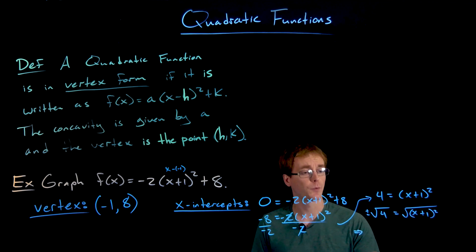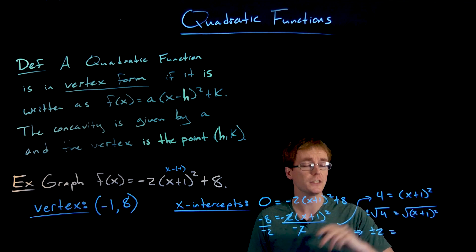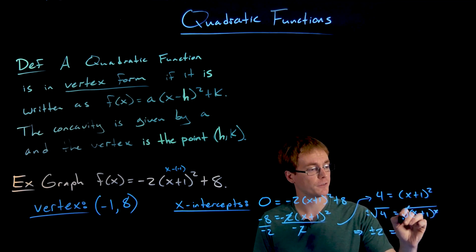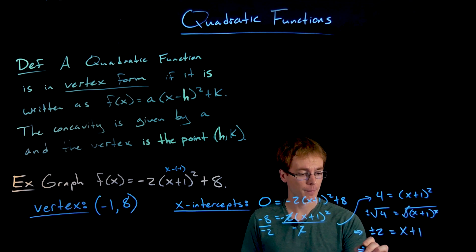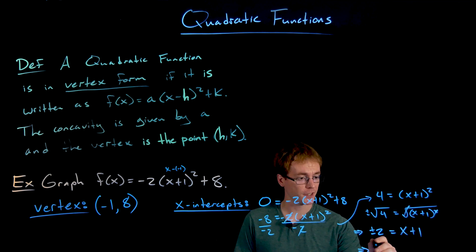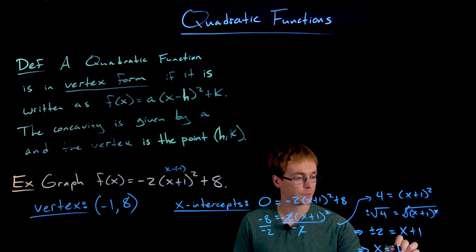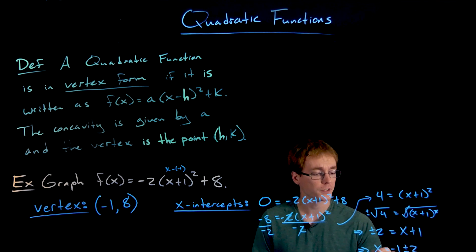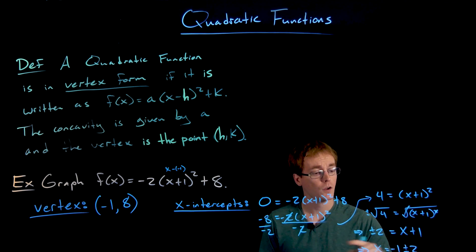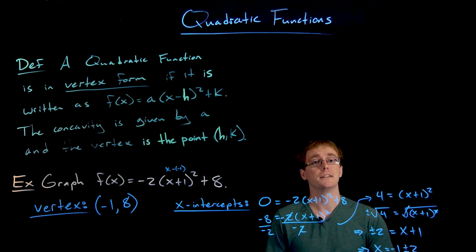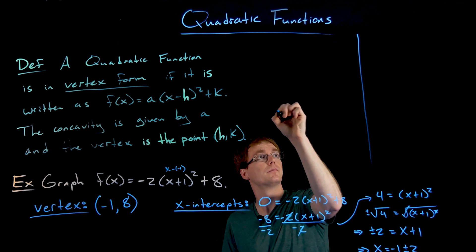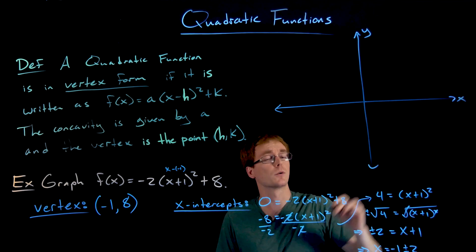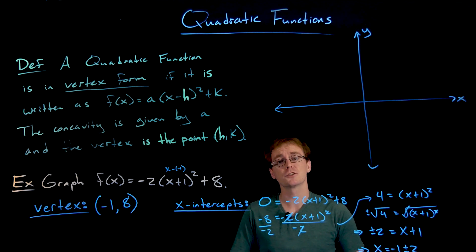So we get plus or minus the square root of four, or plus or minus two, is equal to the square root of (x + 1)². But the square root is just going to cancel that exponent of two, so we just get x + 1. If we solve for x, we get x is equal to -1 ± 2. So x can be equal to -1 + 2, which is positive one, or x can be equal to -1 - 2, which is negative three.